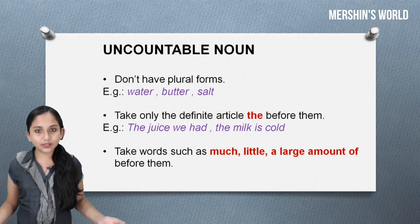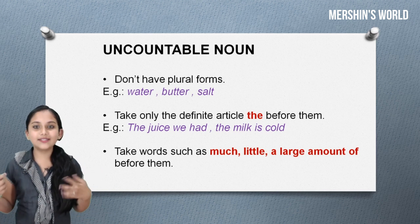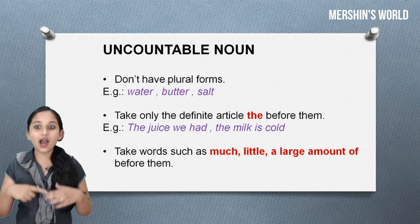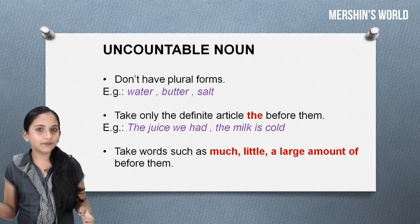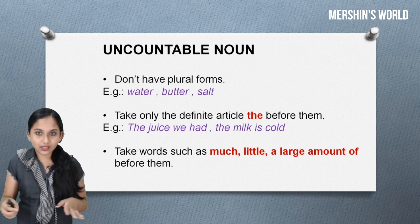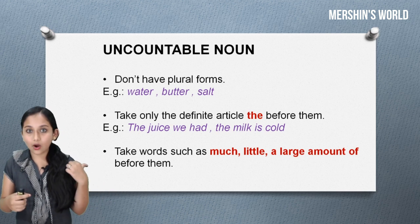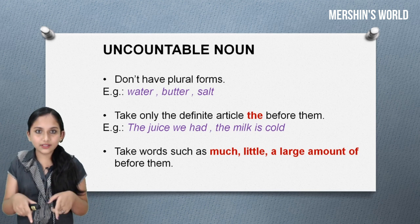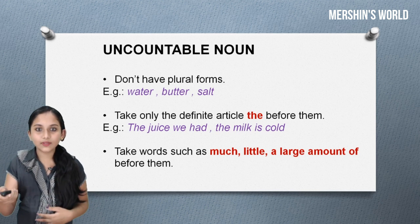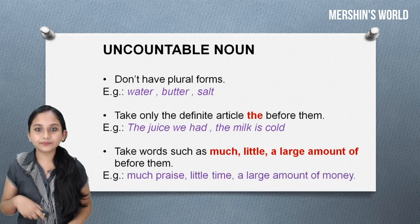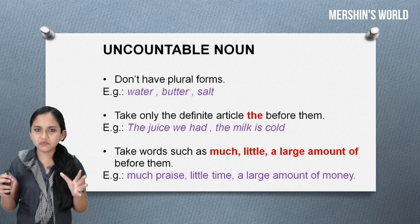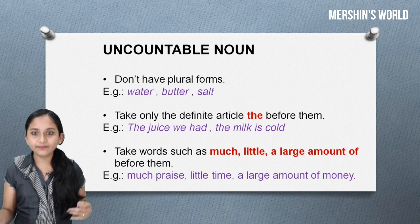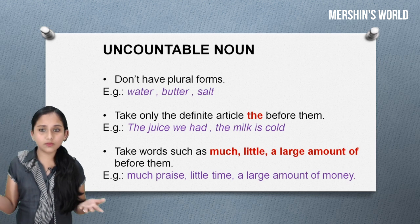Next, uncountable nouns take words such as 'much', 'little', and 'a large amount of' before them. So don't be confused — 'a large number of' goes with countable nouns, and 'a large amount of' goes with uncountable nouns. Examples: much price, little time, a large amount of money.